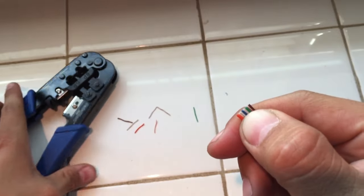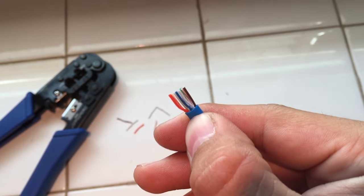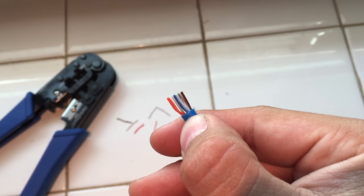After you're done cutting, double check. It's very important. As you can see in my case, the orange wire is first when it's supposed to be second.